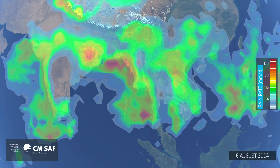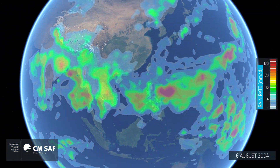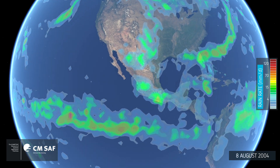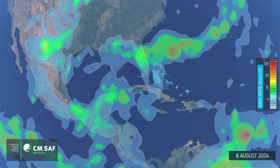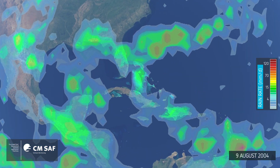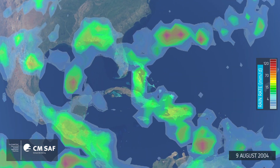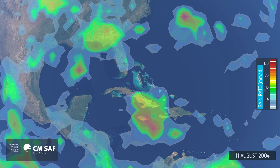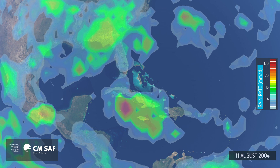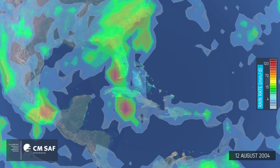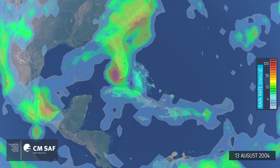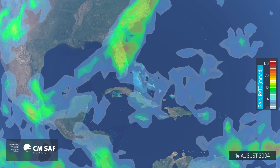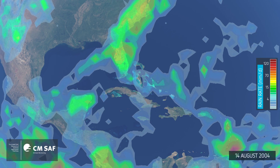Travelling east back over to the eastern seaboard of the United States where the hurricane season is now in progress. Here you can see Hurricane Charlie starting out, travelling across Cuba. This was the most destructive storm in the US for 12 years as it picked up all of that energy as it travelled across the Caribbean and the Gulf of Mexico.